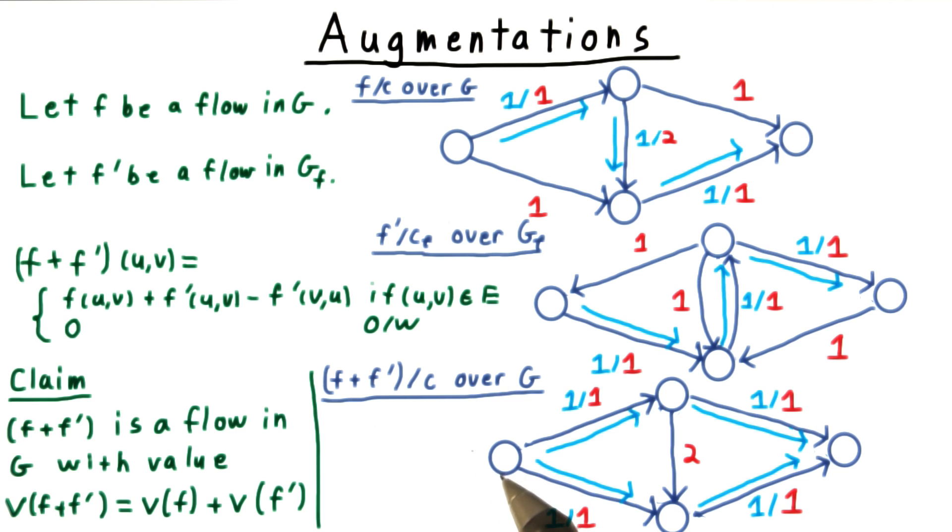This is pretty easy to verify with the equations, but it's not very illuminating. So we'll skip it here and focus on the intuition instead. Is this augmented flow a flow in the original network G?